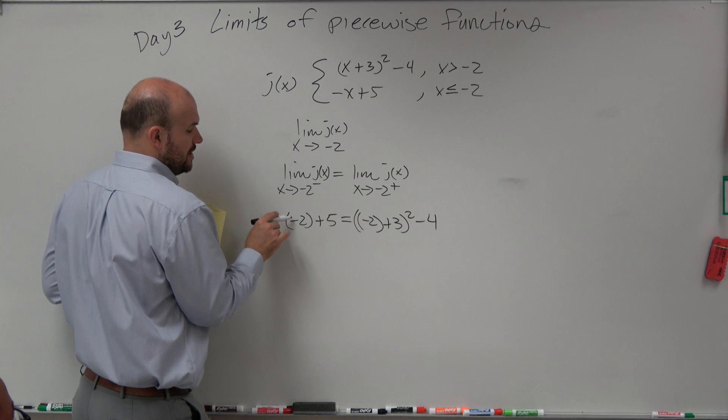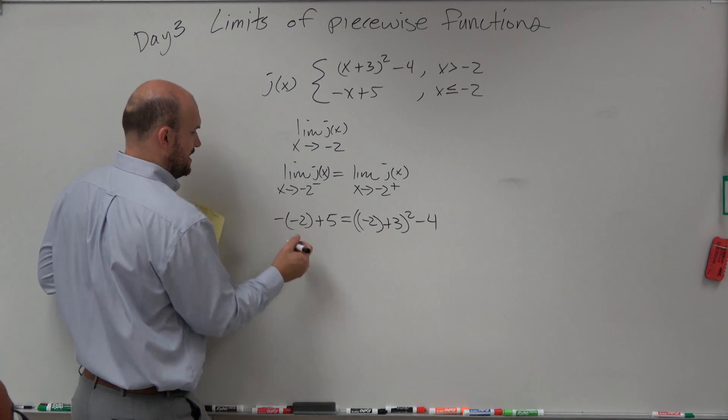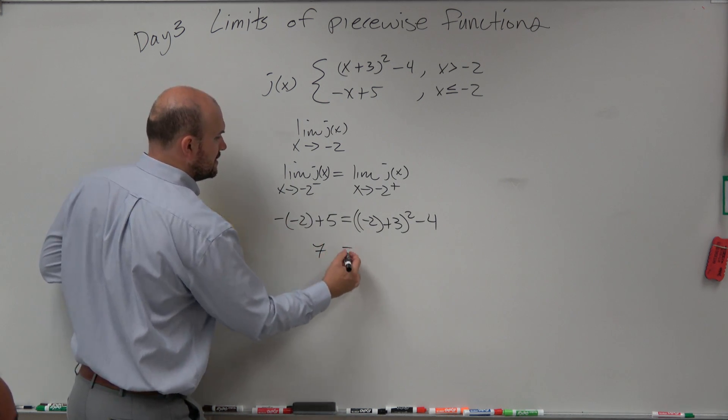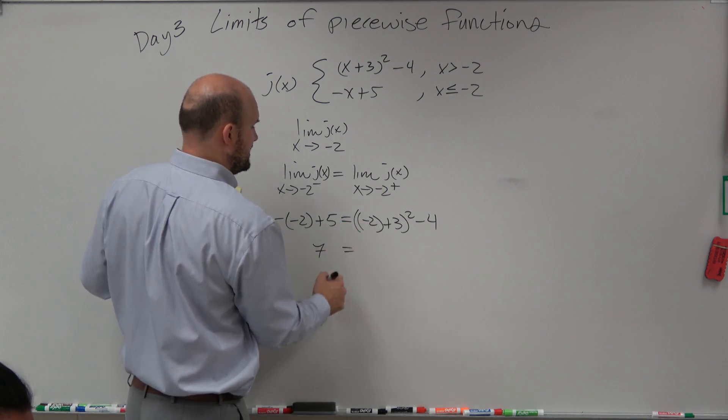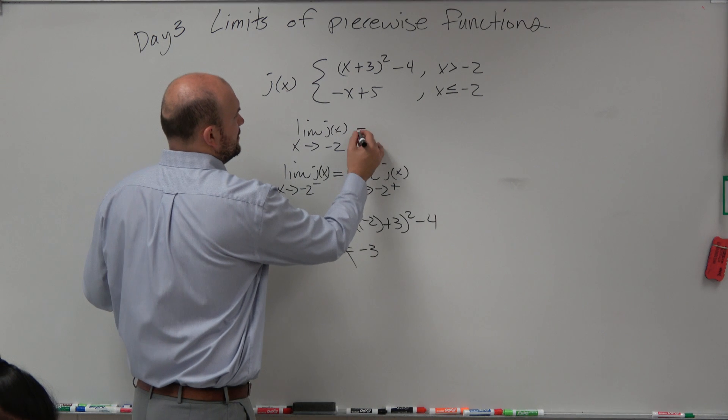So here we have positive 2, so that's going to be 7, is equal to, that's negative 1 minus 3, that's negative 3. Obviously, they're not equal.